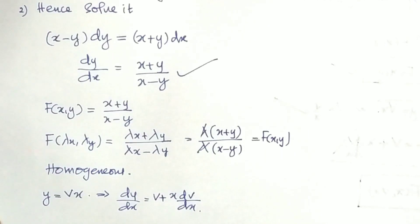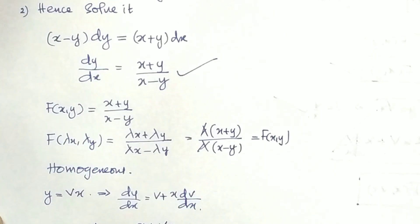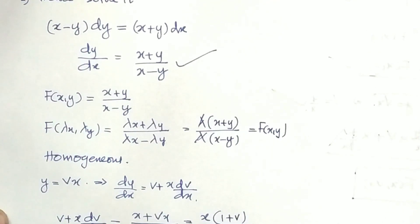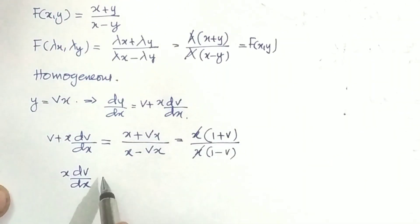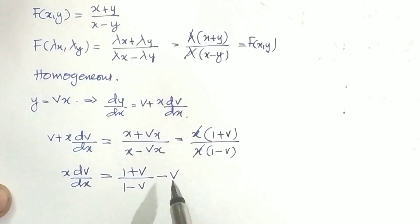Substituting into the equation: v + x dv/dx = (x + vx) / (x − vx). Taking x outside from numerator and denominator, we get x(1 + v) / x(1 − v). The x terms cancel, giving v + x dv/dx = (1 + v) / (1 − v).